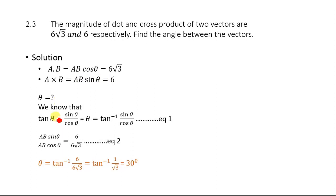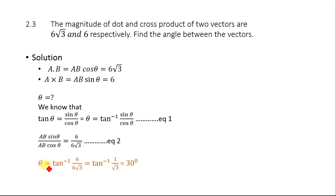Since tangent theta equals sine theta divided by cosine theta, taking the inverse: theta equals tangent inverse of (AB sine theta) / (AB cosine theta) = tangent inverse of 6 divided by 6 root 3 = tangent inverse of 1 over root 3. The final answer is theta equals 30 degrees.